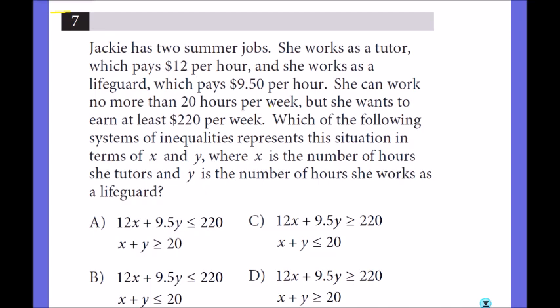Jackie has two summer jobs. She works as a tutor and gets paid $12 per hour. And she works as a lifeguard and gets paid $9.50 per hour. She can work no more than 20 hours. So if I call x hours for tutoring and y hours that she lifeguards, it cannot be more than 20. That means x plus y cannot be more than, meaning it has to be less than or equal to 20. But she wants to make at least $220 per week. So at least 220 means must be greater or equal to.